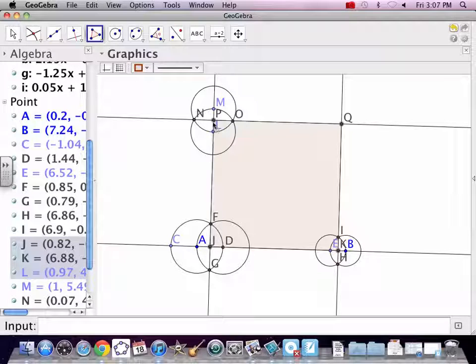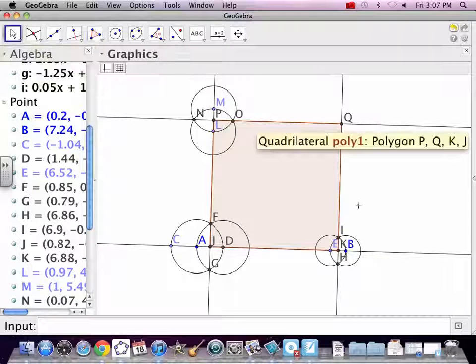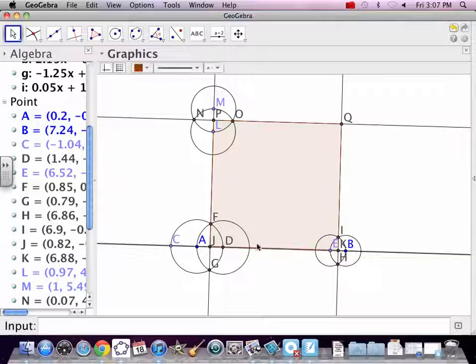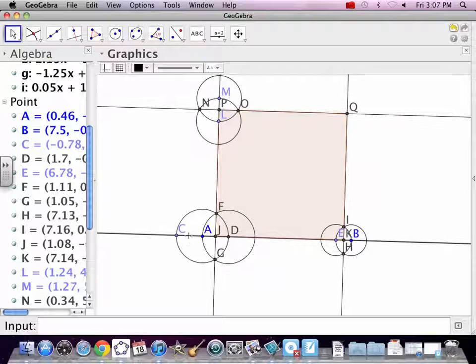And our rectangle is right here. Now sometimes in GeoGebra we've got to be careful where you're clicking on. So there's a rectangle.